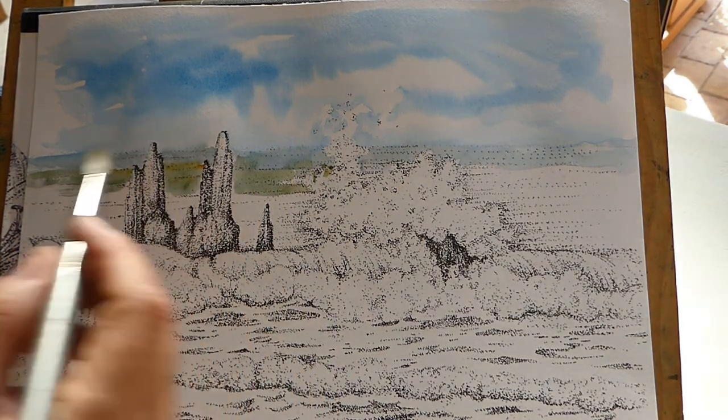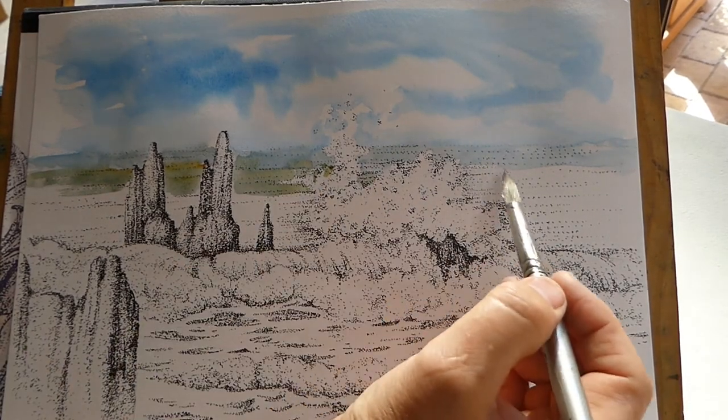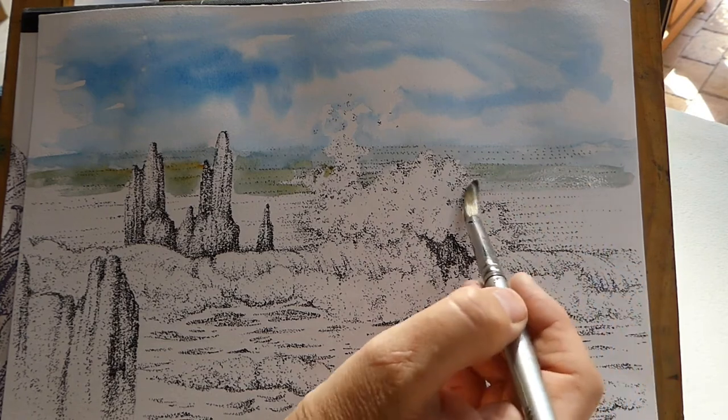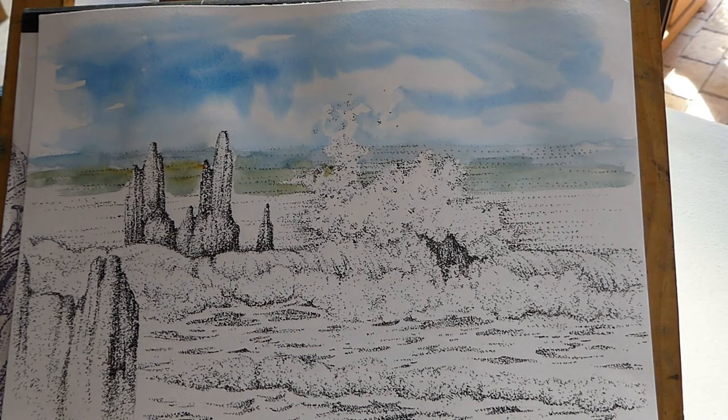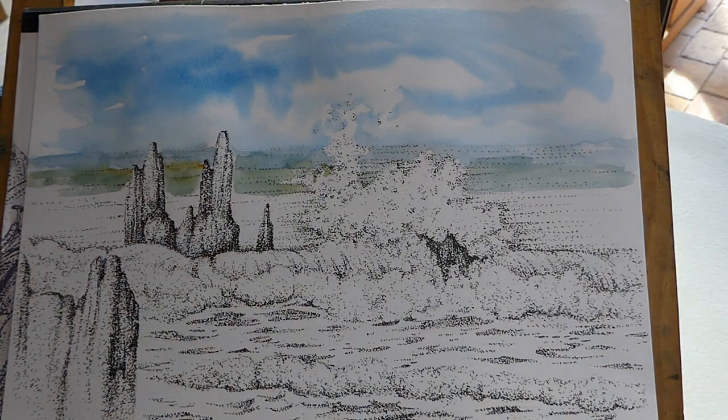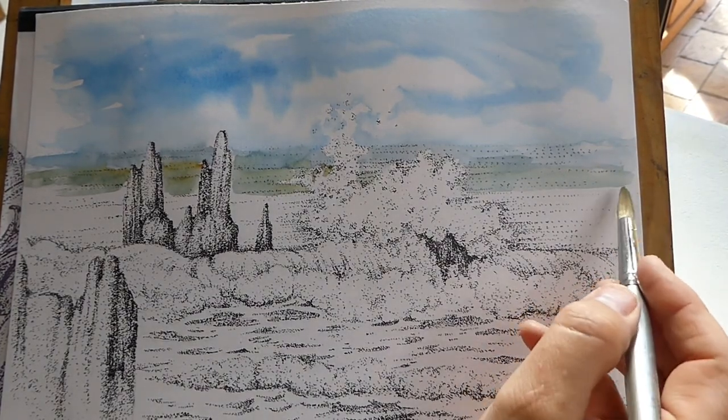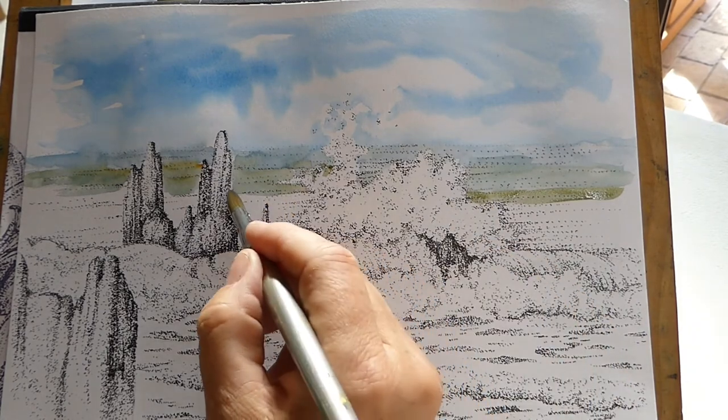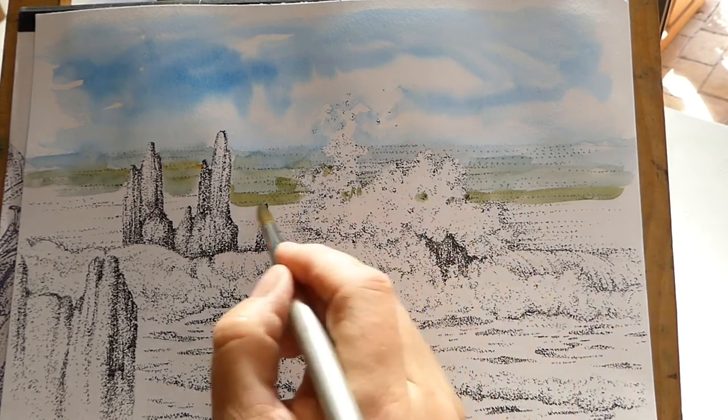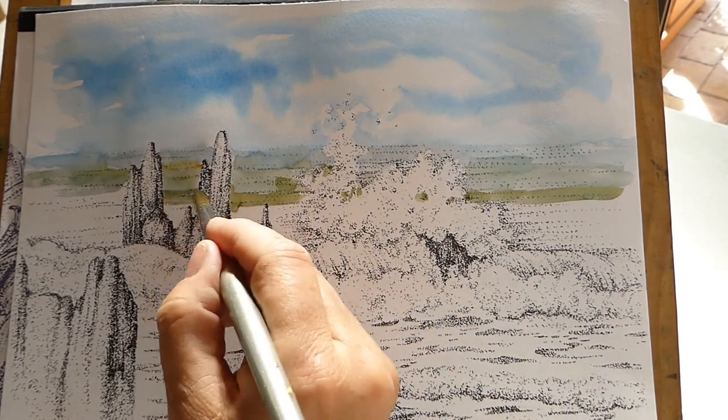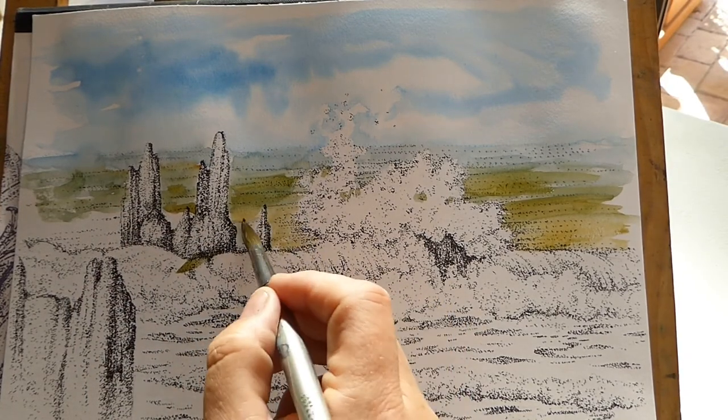Now I've added a little bit of the quinacridone gold into this as I come forward, just greening that sea up a little bit. Again just making sure I go around the shape of the foam so that that stays visible. And I keep just adding a little bit more of that gold into it as I come forward, just brightening the color as it comes towards you. I live on the east coast here and we get these amazing color seas.